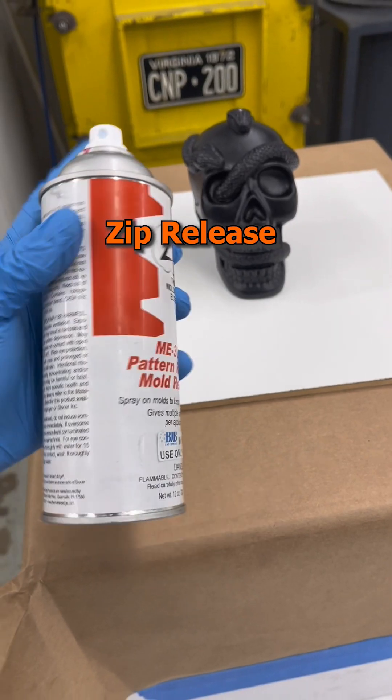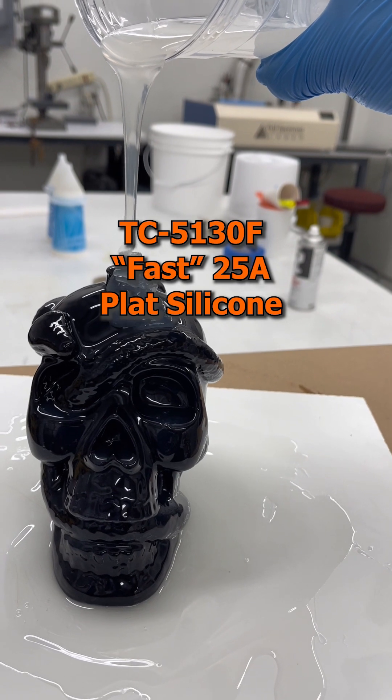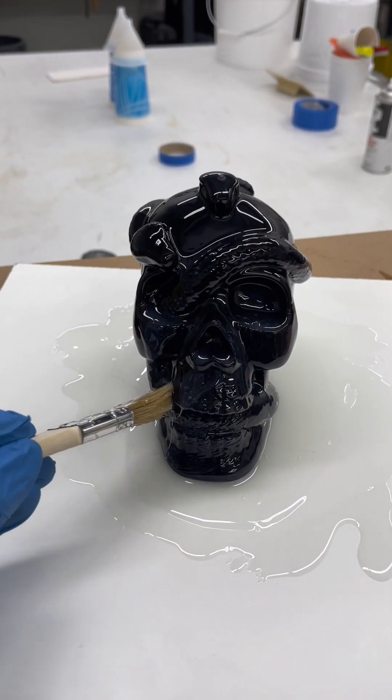I sprayed the piece with Zip Mold Release, poured a thin print coat of degassed TC5130 Fast Silicone, and brushed it thoroughly to cover all crevices.